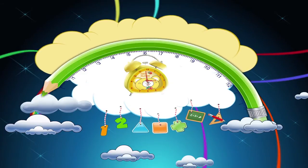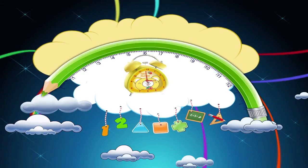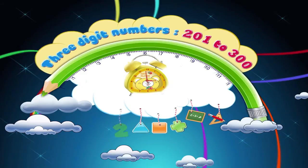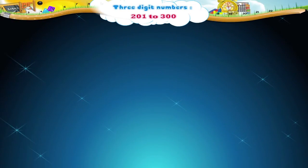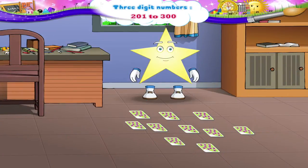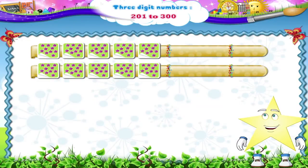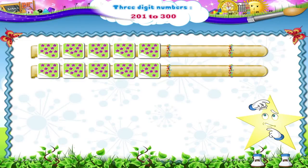Three-digit numbers 201 to 300. Starry, why have you spread these sticker pages with stars everywhere? Come on, let's pick up all the sticker pages and clear up this place. Starry, each sticker page here has 10 stars. Do you know how many sticker pages there are?